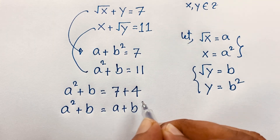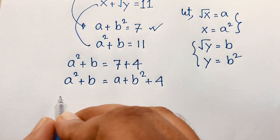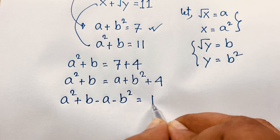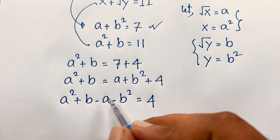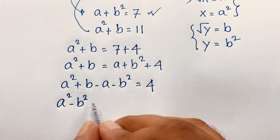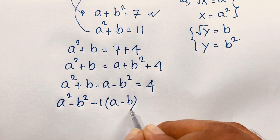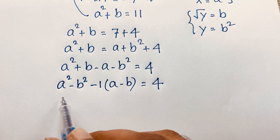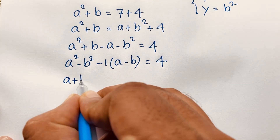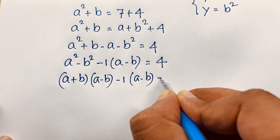Now, a squared plus b equals 11, which is 7 plus 4. Since 7 equals a plus b squared, we get: a squared plus b minus (a plus b squared) equals 4. Rearranging: a squared minus b squared minus (a minus b) equals 4. Applying the identity a squared minus b squared equals (a+b)(a-b), we get (a+b)(a-b) minus 1 times (a minus b) equals 4.